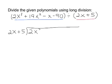So 2x to the third, plus 19x squared, minus x, minus 90.